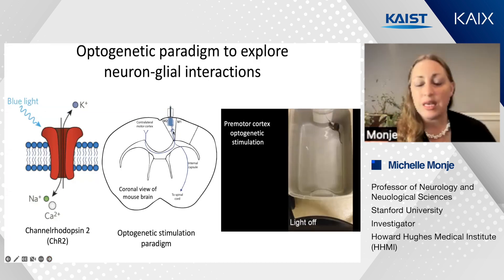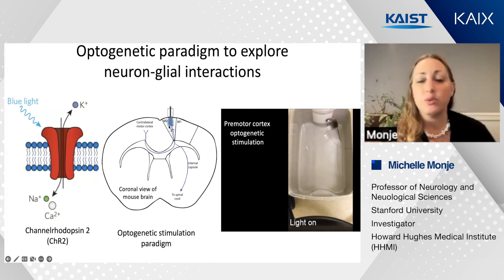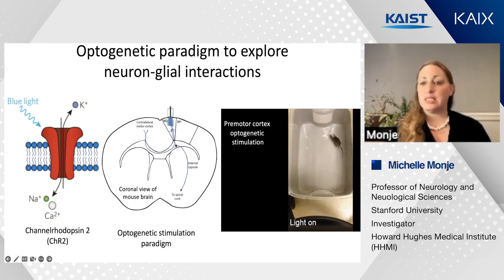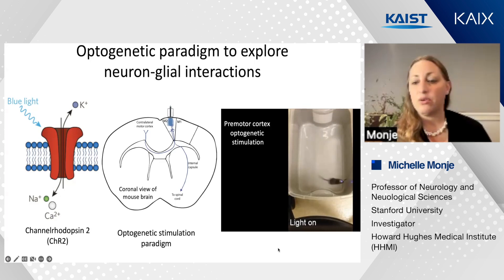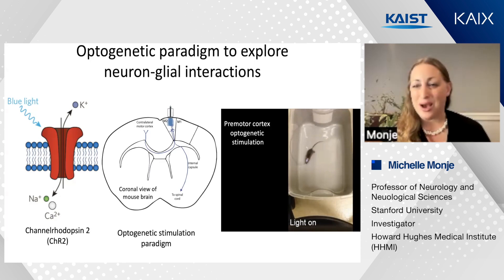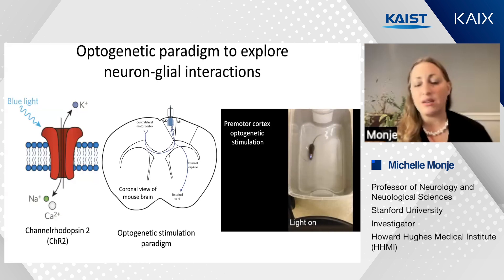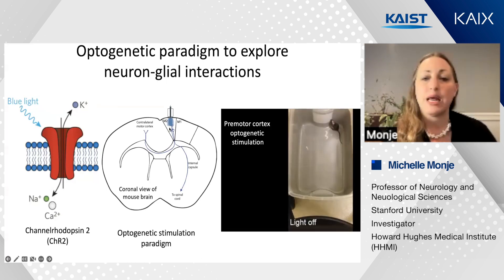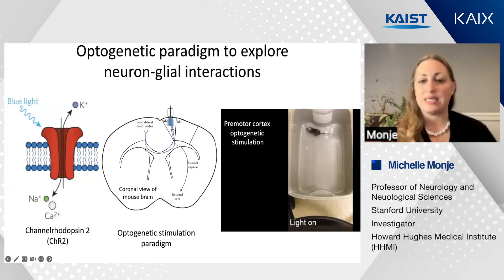If we stimulate these cortical projection neurons in the deep layers of cortex by delivering blue light from the surface of the brain—doing this in the motor planning or M2 cortex—this will elicit complex motor behavior from the mouse. We see complex motor behavioral outputs, confirming we've successfully recruited activity within the circuit in a physiologically relevant way. Then we can ask straightforward questions about how other cell types within the stimulated circuit respond to changes in neuronal activity.